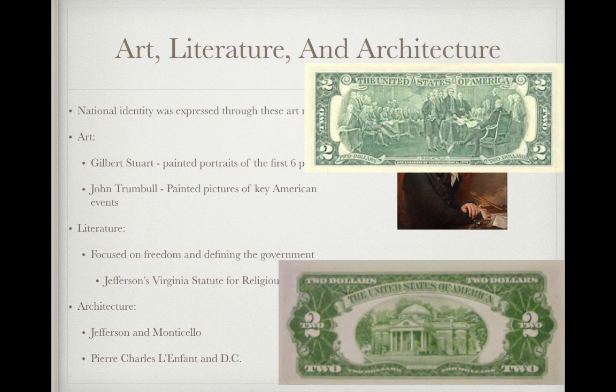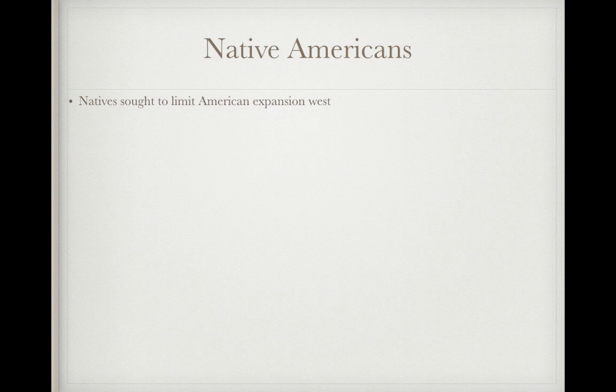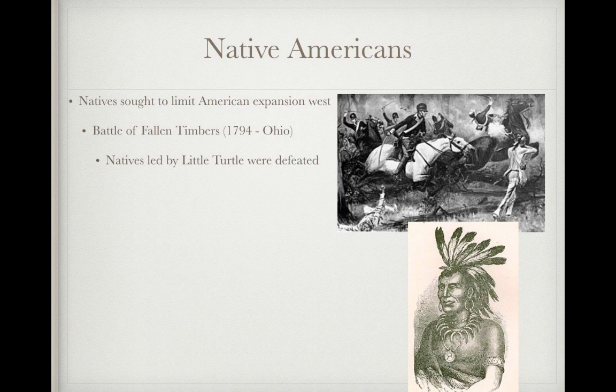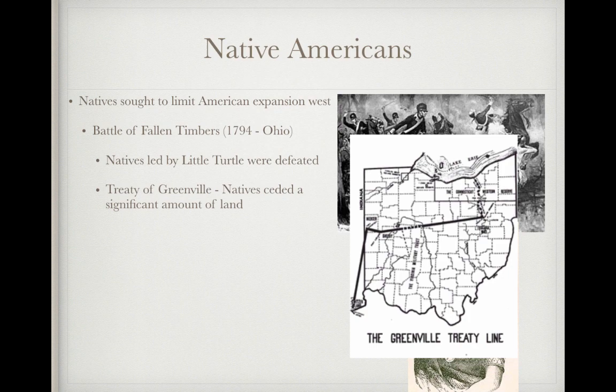Jumping over to Native Americans — Natives sought to limit American expansion out west, particularly west of the Appalachian Mountains. If you think back to Pontiac's Rebellion, this is something that had been going on for several years. In 1794, we have the Battle of Fallen Timbers in Ohio, in which Natives led by Little Turtle were defeated. Unfortunately for them, they had to cede a significant amount of land to Americans under the Treaty of Grenville, losing a lot of land in the Northwest Territory.